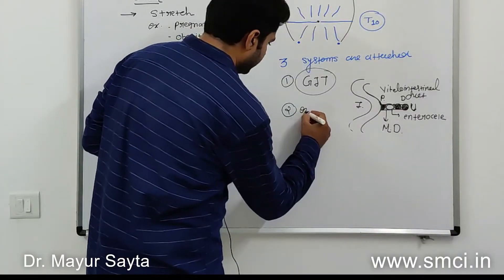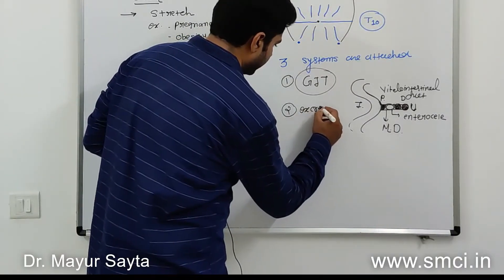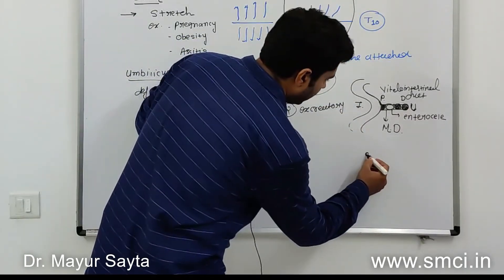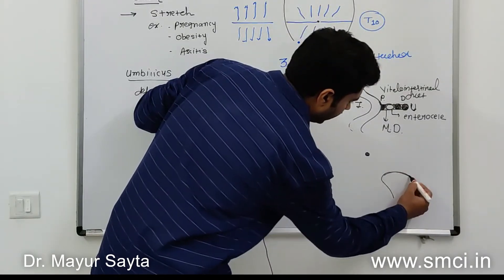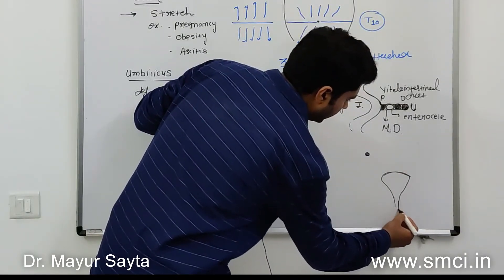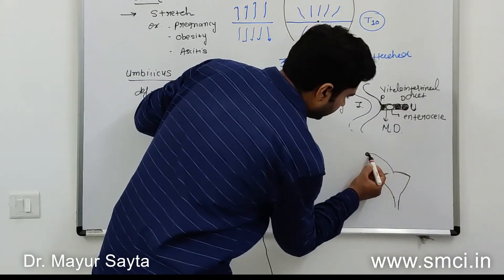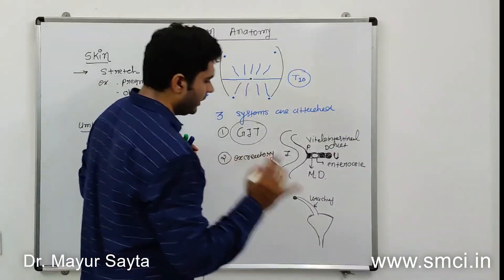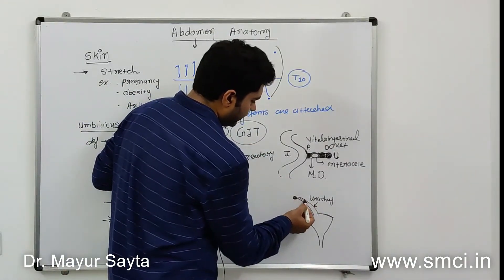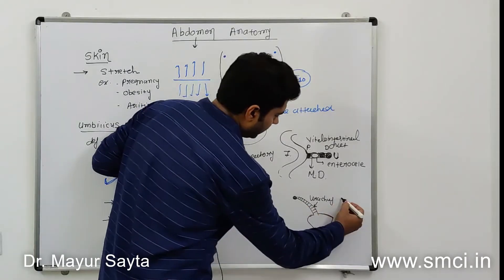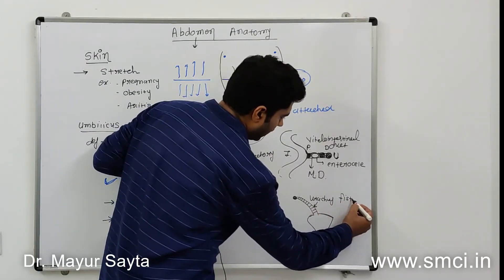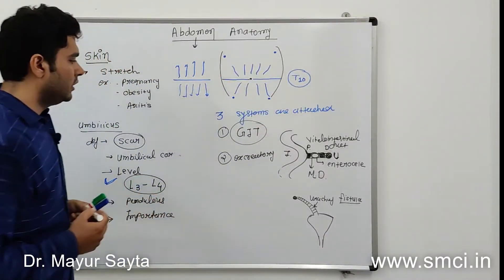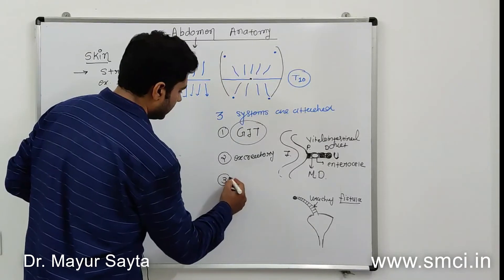The second system is the excretory system. The urinary bladder connects to the umbilicus via the urachus. The urachus is also normally obliterated, but if patent it results in a urinary fistula.